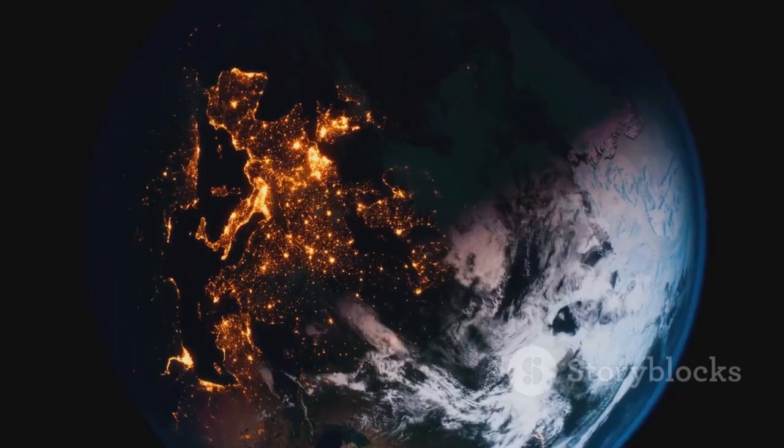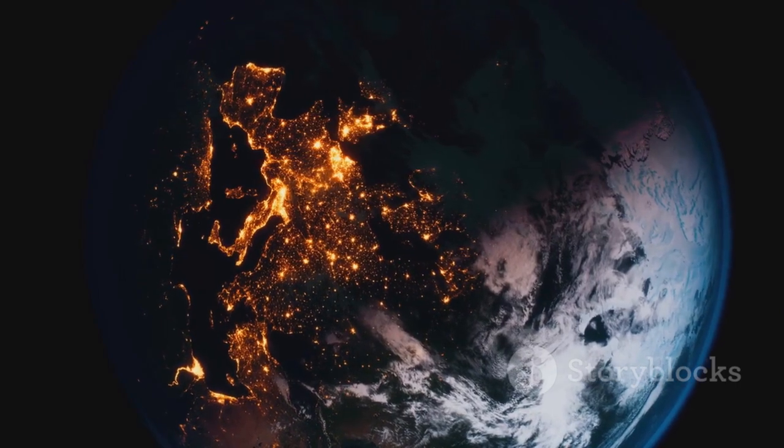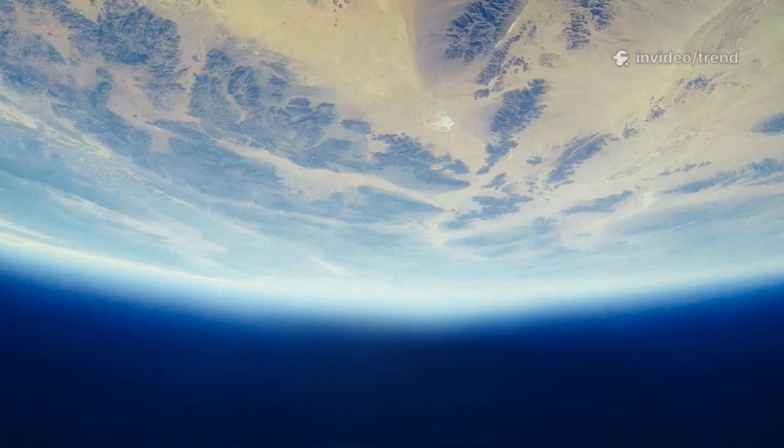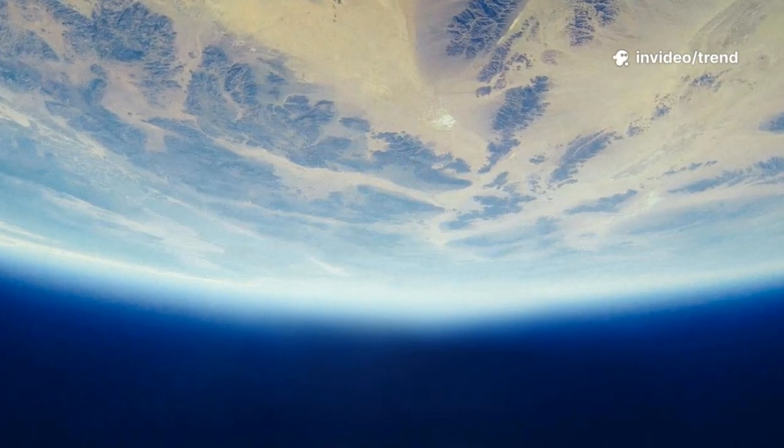Sagan wrote: 'Look again at that dot. That's here. That's home. That's us. All our joys, sufferings, and histories played out on that mote of dust.' The image is a humbling perspective, showing our world without borders or divisions. It's a powerful antidote to arrogance, reminding us of our shared home.